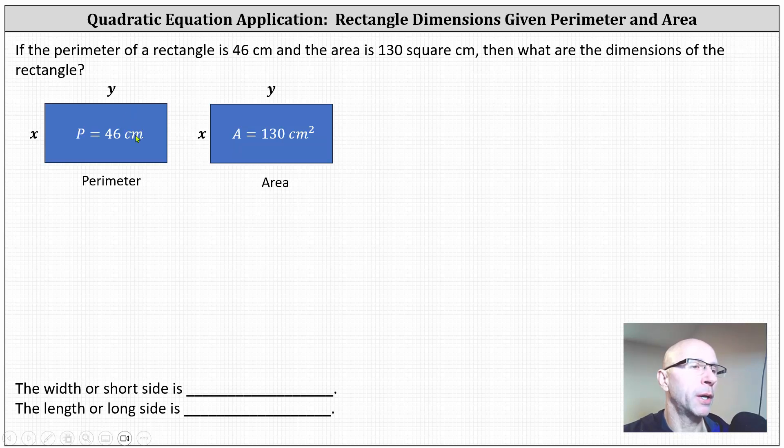Now I'll write an equation for the perimeter and an equation for the area. Because the perimeter is a length around the outside of the rectangle, the perimeter is equal to 2x plus 2y, which we know is equal to 46 centimeters. And then to find the area, we multiply the length and the width, which gives us the equation x times y equals 130.